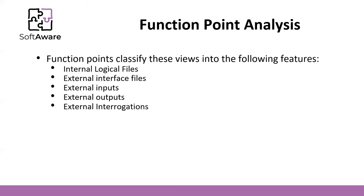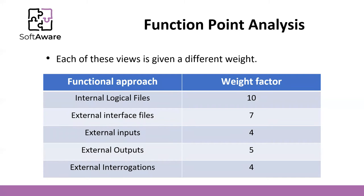To use function points, we classify requirements into the following features: internal logical files, external interface files, external inputs, external outputs, and external interrogations. For each feature, a different weight factor is given. Internal logical files have a weight factor of 10, external interface files 7, external inputs 4, external outputs 5, and external interrogations 4.